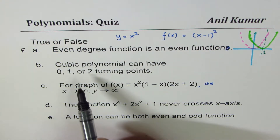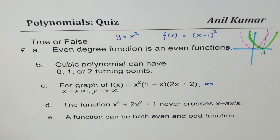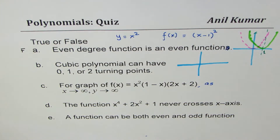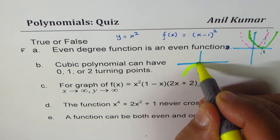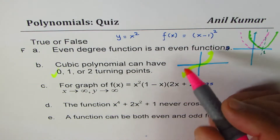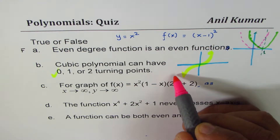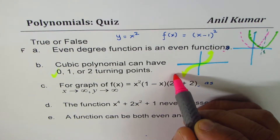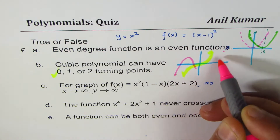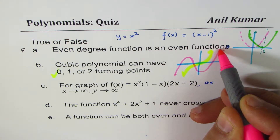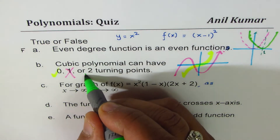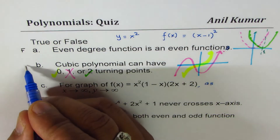Statement B: a cubic polynomial can have 0, 1, or 2 turning points. Let's sketch cubic polynomials. x³ has zero turns — that's valid. For a cubic with a positive leading coefficient, the graph starts bottom-left and ends top-right. If you try to make just one turn, you'd still need a second turn to reach the correct end. So a cubic can only have zero or two turning points, not one. This statement is false.